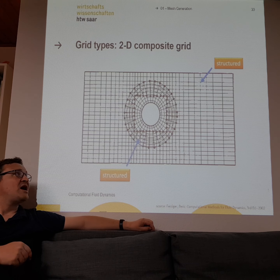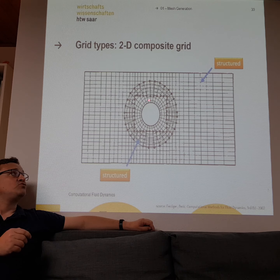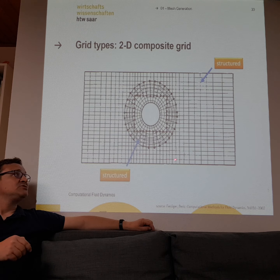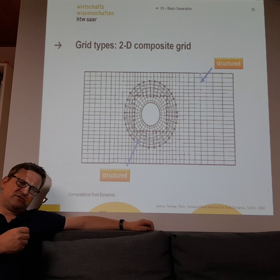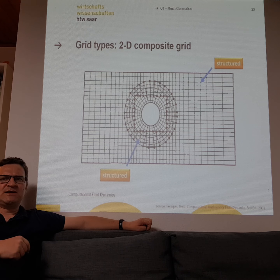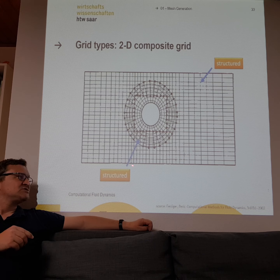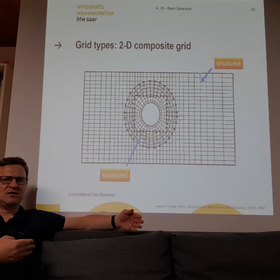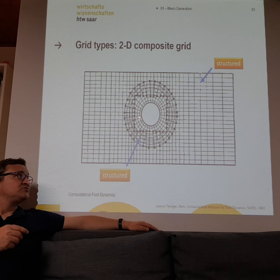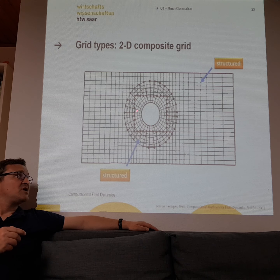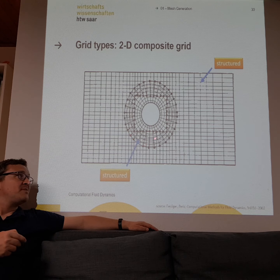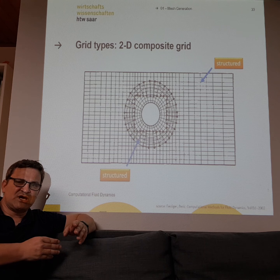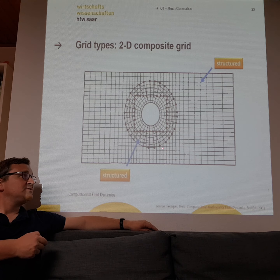Composite meshes are used when you have some parts of the geometry that should be structured and other parts that are not. Why use such a complicated structure? A structured mesh simulation is really fast and stable. If you want to calculate a big room, you use a structured mesh, but then you have one small complicated geometry — like this circle here — where you need to go into detail. You use, for example, a cylindrical mesh and then couple it with the structured mesh, copying all the values from one to the other.